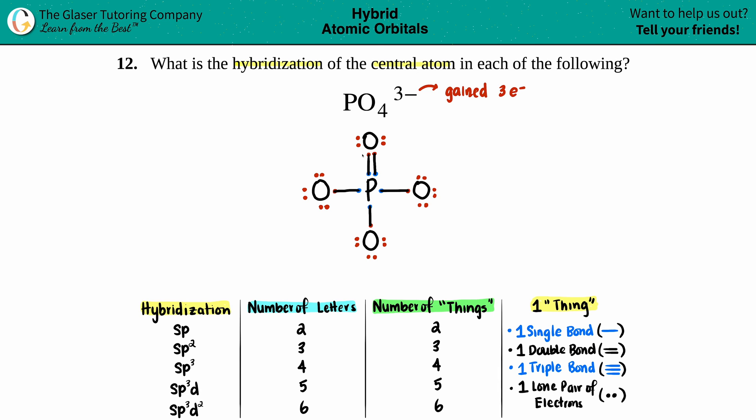So we just want to find out that hybridization of the central atom, which is the phosphorus. So I'm only looking at what phosphorus has. Now to determine the hybridization, just know that there is a max of five different hybridizations you might have to know.